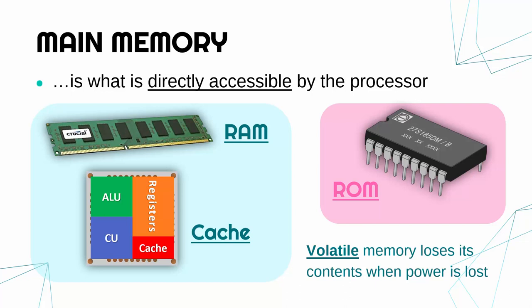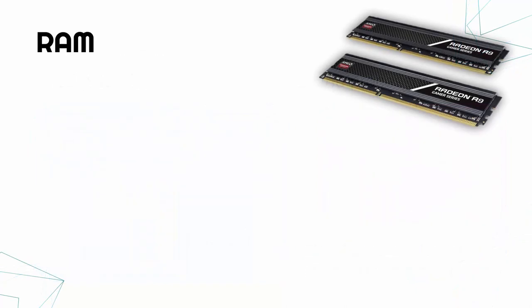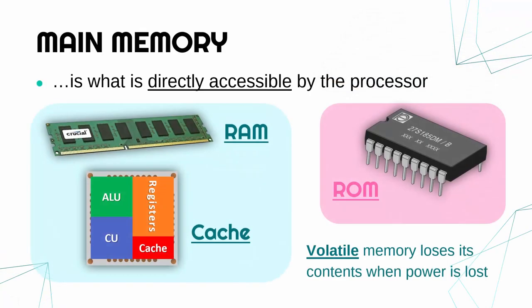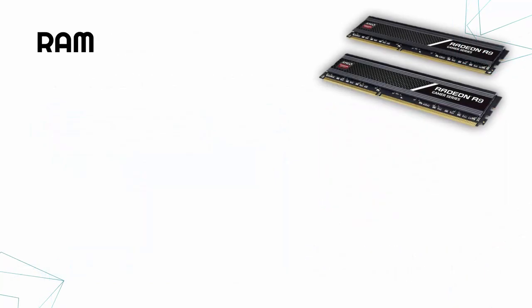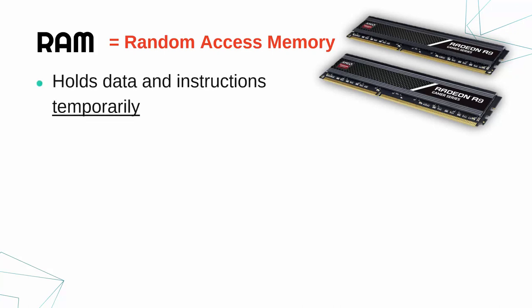RAM, cache and ROM are all connected to the CPU — storage is not directly accessible, it's a separate piece of hardware. RAM as an acronym stands for random access memory. Its whole purpose is to hold data and instructions temporarily. It's temporary because it's volatile — the moment your computer is turned off, you lose the contents. It's only active when the power is on, and it holds both data and instructions.